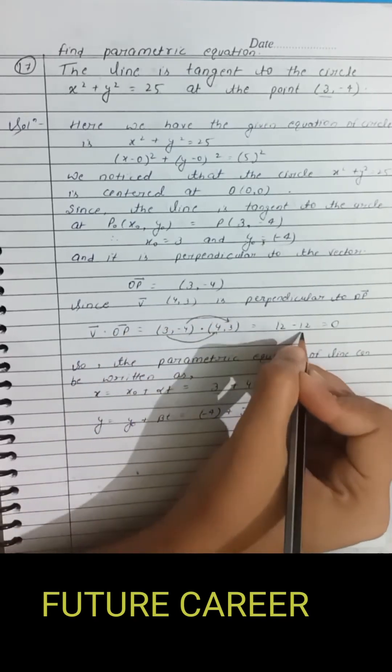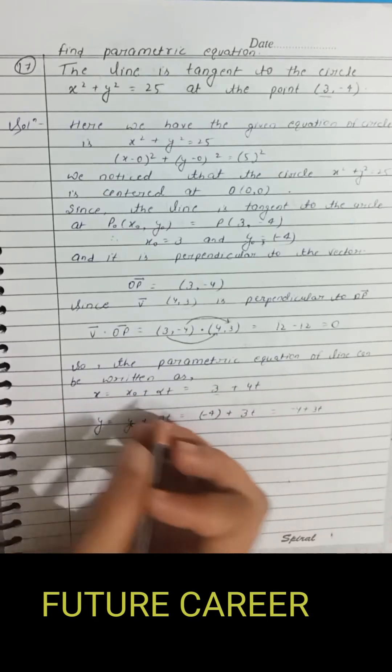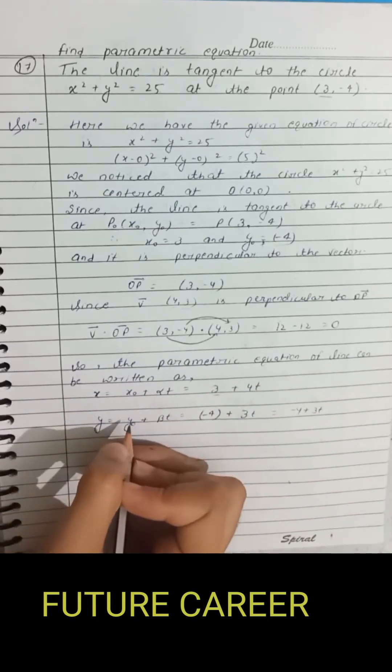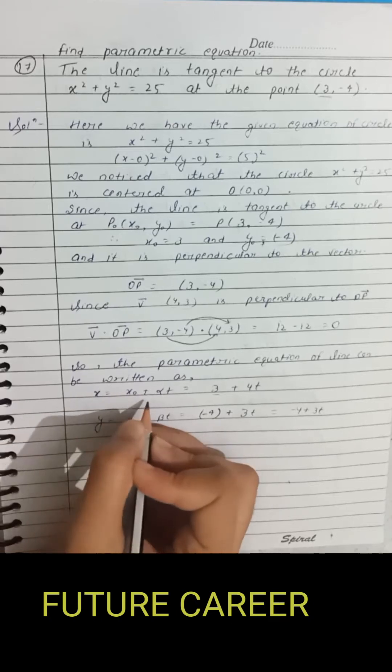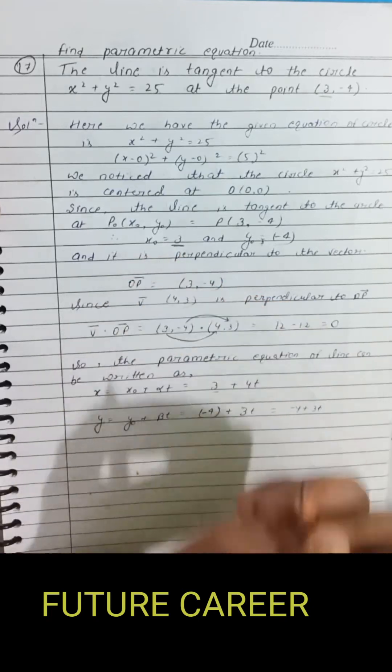So 12 minus 12 equals 0. So the parametric equation of the line can be written as x equals x naught plus alpha t, where x naught equals 3.